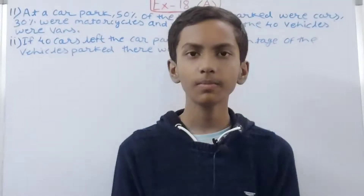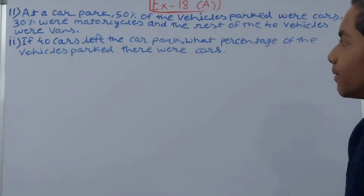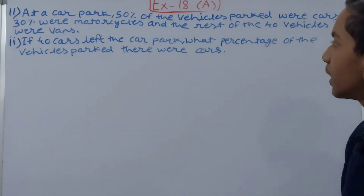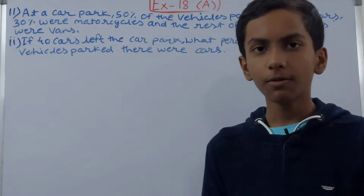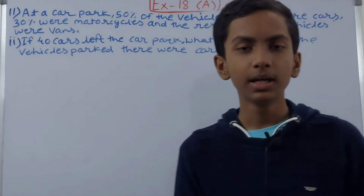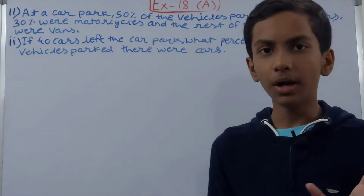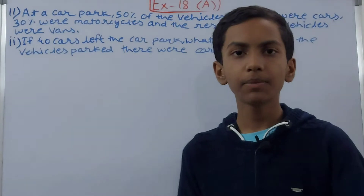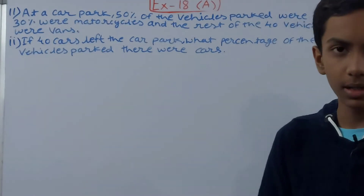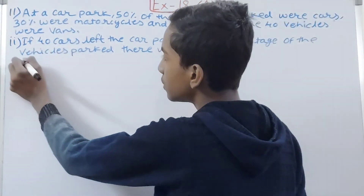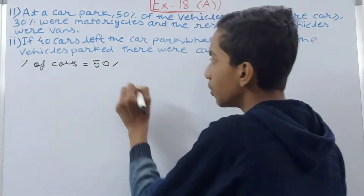Now let's move on to the next part. It says: if 40 cars left the car park, what percentage of the vehicles parked there were cars? We first need to find the total number of cars when there were 200 vehicles total. The percentage of cars is 50%, so 50% of 200 gives us 100 cars.